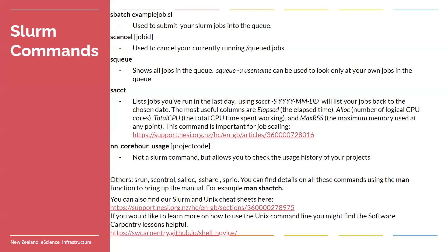If you submit a job and you realize you want it cancelled — even if it's already running — you can use `scancel` followed by the job ID to kill the job or remove it from the queue before it starts. You can get the job ID from either of the next two commands, `squeue` and `sacct`, both of which have a column called job ID. `squeue` by itself will show all the jobs in the queue on that platform — generally not very useful. So you'll want to use `squeue -u username`, which will show you only your own jobs that are running and in the queue. Once a job is finished, it's removed from squeue, so you can't use it to look back at historical jobs.